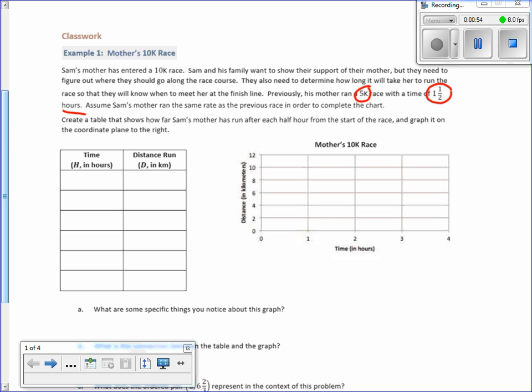First piece of information: 5K race, one and a half hours. Assume Sam's mother ran the same rate as the previous race. Create a table that shows how far Sam's mother has run after each half hour from the start of the race, and then graph it on the coordinate plane. So time in hours, each half hour: one half, one, one and a half, two, two and a half, three. I prefer improper fractions; they're easier to multiply.